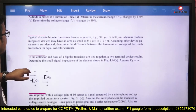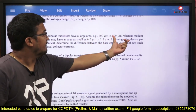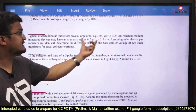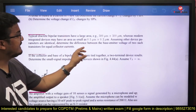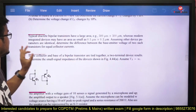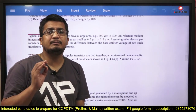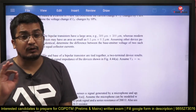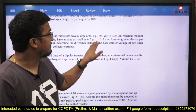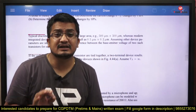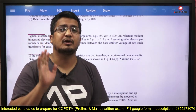Next question: a typical discrete bipolar transistor has a large area — the area of one transistor is given. A modern integrated device may have a much smaller area. Assuming all other device parameters are identical, determine the difference in base-emitter voltage VBE between the two transistors for equal collector current. Using IC = IS × exp(VBE / VT), with equal IC and identical VT, the saturation current IS scales with area. You need to exploit that property to calculate the VBE difference.